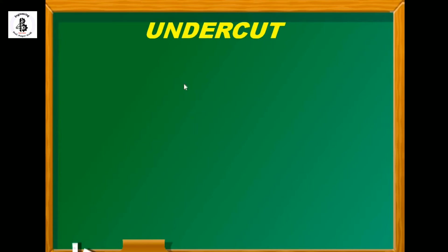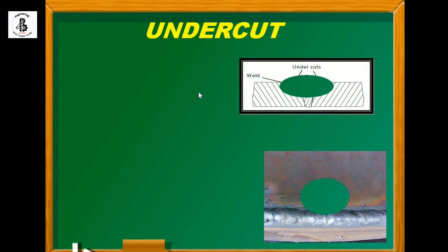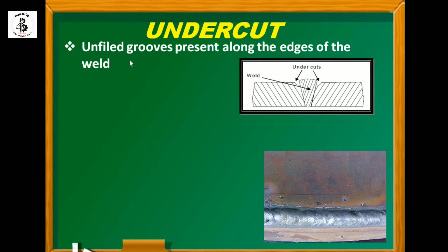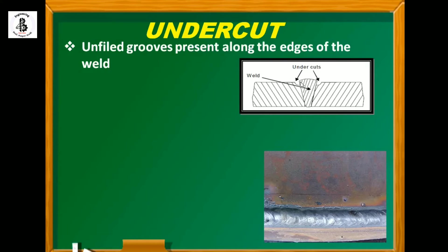The first defect is undercut. You can see underfill grooves present along the edges of the weld. The base metals are on both ends, and in between is the weld metal. This is the basic fundamental defect known as undercut, and you can see it occurring in actual welding practice.